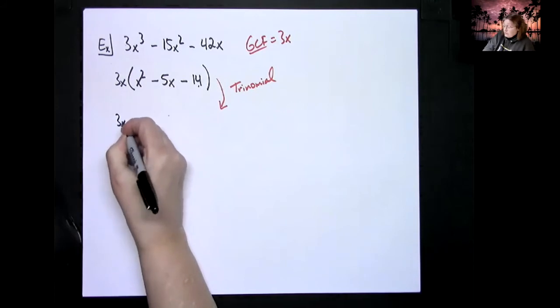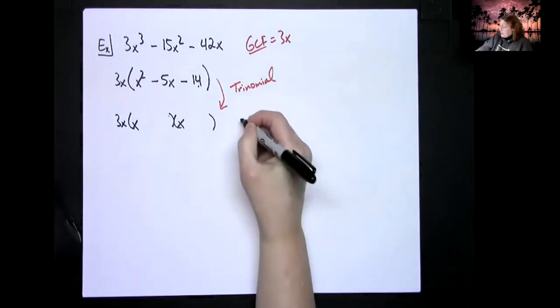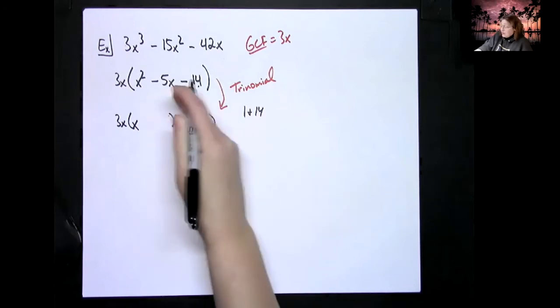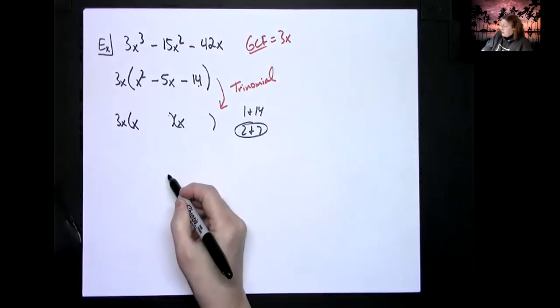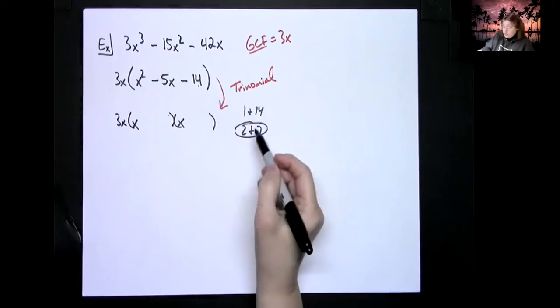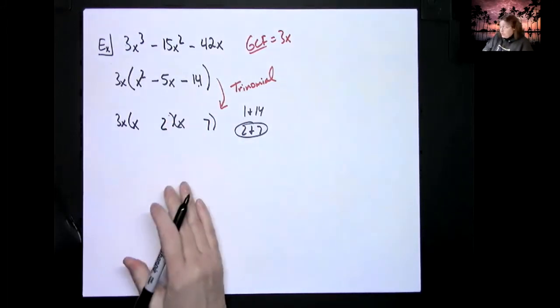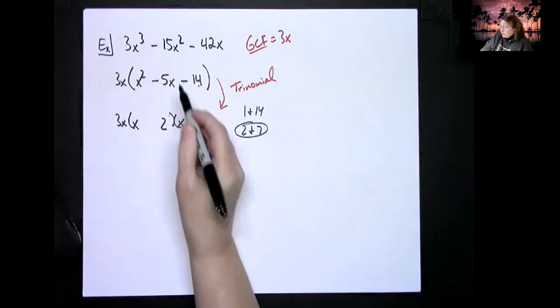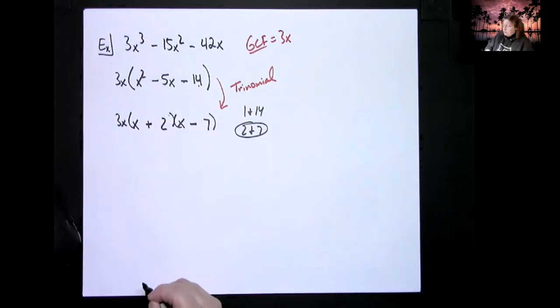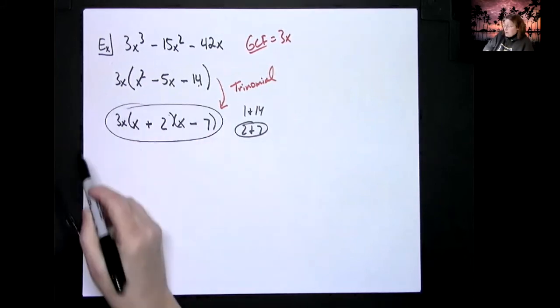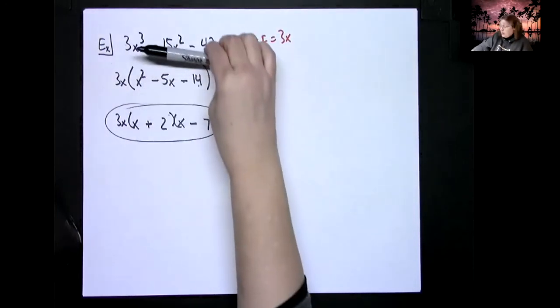When you then go to factor it, keep the 3x in front. I know that trinomial will factor into two binomials with a leading x and x right there. If I'm doing my trial and error here, 1 and 14 but I can't get 5. 2 times 7 is 14 and that's going to, if I subtract them, it's going to get me a 5 there. So it's a 7 in one place and a 2 in the other. I need a negative here which means unlike signs, I need the 5 to be negative so the bigger number has to be negative, so this one's going to be negative this one's going to be plus. So then that has to be my answer.